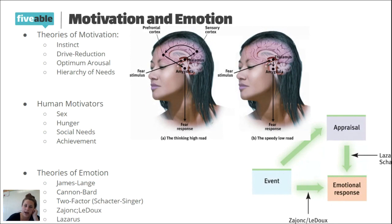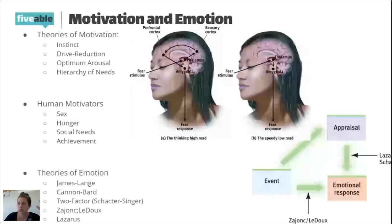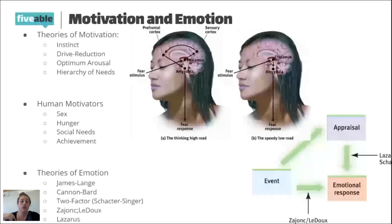Primacy versus recency effect links back to the cognition unit. We remember things that are either first or last in a list but often forget the middle. We remember the first items because they're the first things we encode — that's the primacy effect. The recency effect means we also remember the last several items because those are most recent in memory. You remember the first and the last, but often forget the middle.